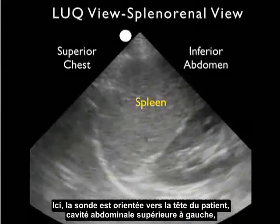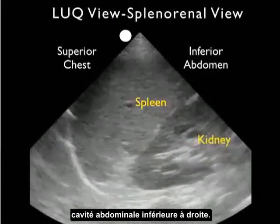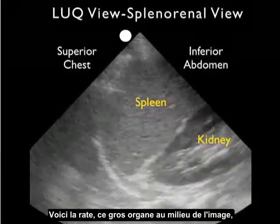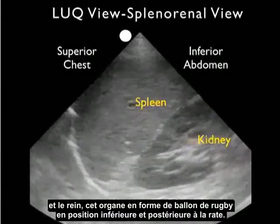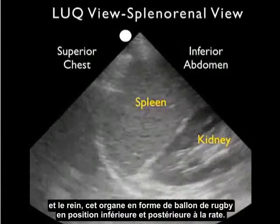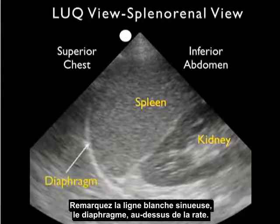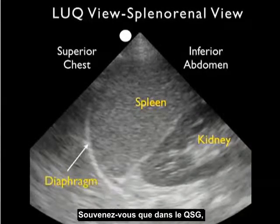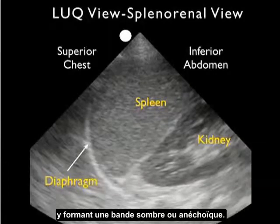I have the probe oriented towards the patient's head, so the superior chest cavity is towards the left and the inferior abdominal cavity towards the right. Notice the spleen — the large organ in the middle of the image — and the kidney, the football-shaped organ seen inferior and posterior to the spleen. Notice the curving white line just above the spleen, which is the diaphragm. Fluid will accumulate preferentially between the spleen and the diaphragm as a dark or anechoic stripe positioned there.